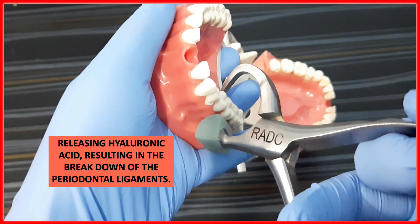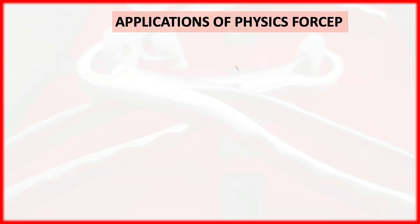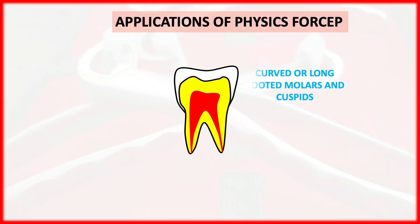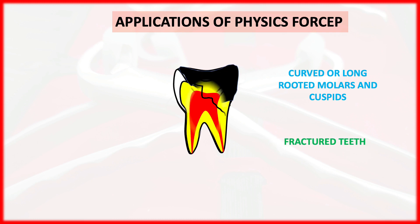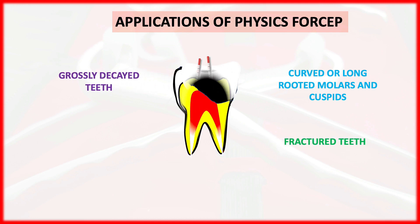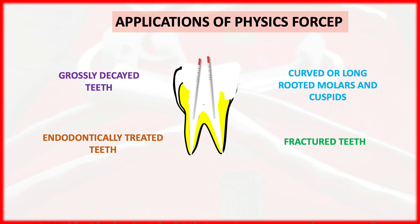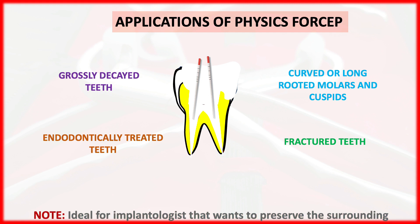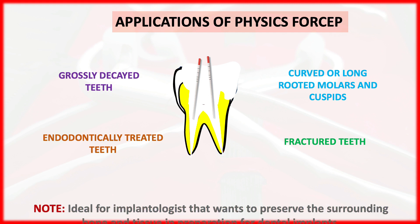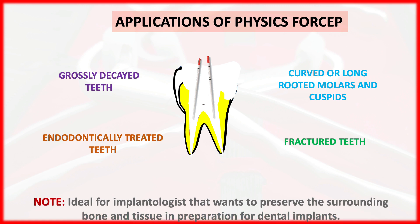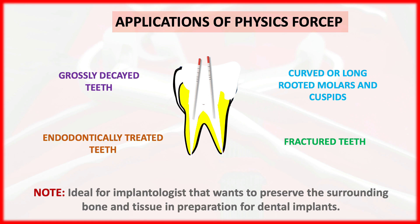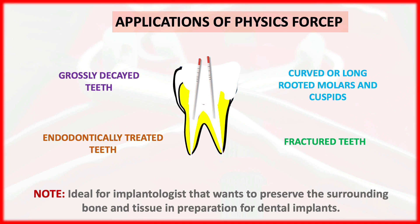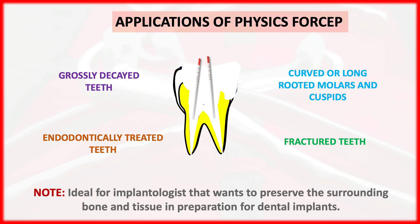Applications of physics forceps: they are used for curved or long-rooted molars and cuspids, fractured teeth, grossly decayed teeth, and endodontically treated teeth. However, they are not used for root stems. They are ideal for implantologists who want to preserve surrounding bone and tissue in preparation for dental implants, as the atraumatic extraction preserves the surrounding bone for implant placement.